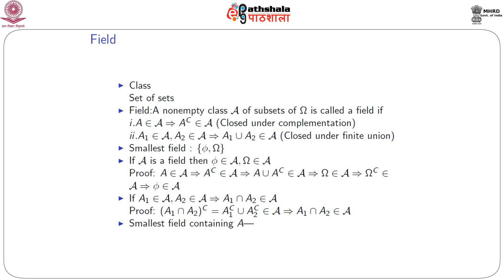The second property is closed under finite union. For two sets A₁ and A₂ both belonging to script A, their union A₁ ∪ A₂ also belongs to script A. We can extend this to finite sets A₁, A₂, ..., Aₖ — their union also belongs to script A. If a non-empty class satisfies these two conditions, it is called a field.